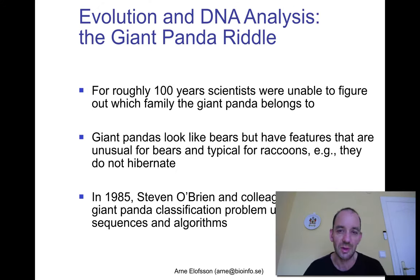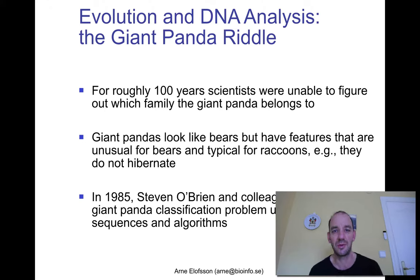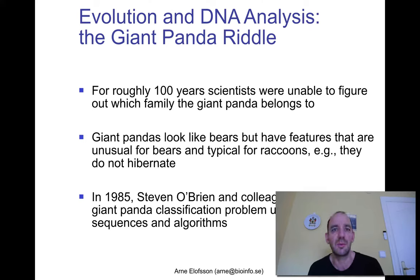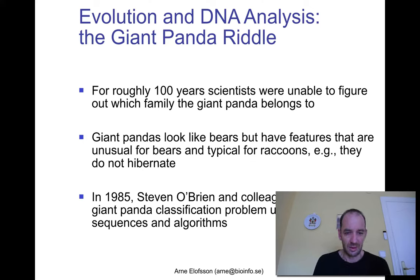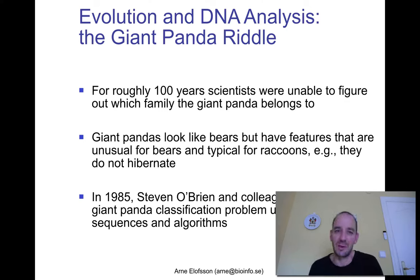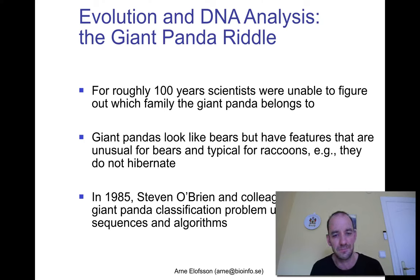One typical example is the riddle of the giant panda. We know how the giant panda looks — it's one of the most famous animals in the world. But for the last 100 years or so, people were not able to figure out how it was related to other animals. Is it a bear, or is it a raccoon? They look like bears but they are black and white, and one thing typical for raccoons but not bears is that giant pandas do not hibernate. So it was not clear whether they were related to bears or raccoons.